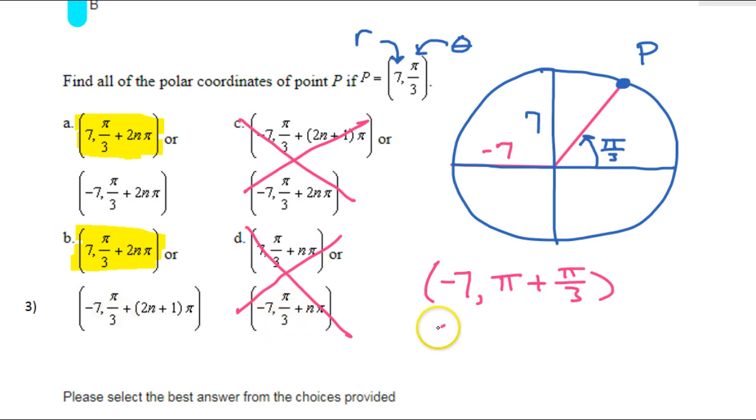Now, looking at my answers, I see that they have pi over 3 in the front. So, I'm sure you would agree that this would be the same thing as having negative 7, comma, pi over 3 plus pi. That's the same thing.